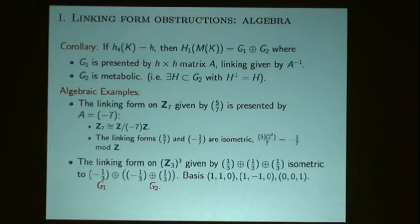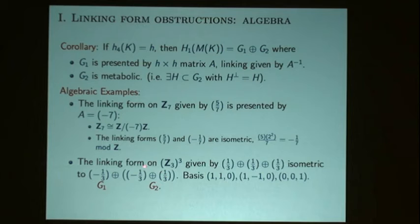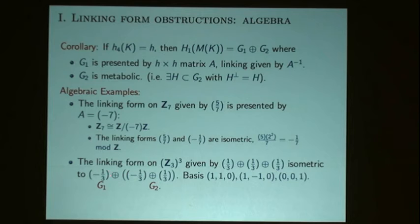In doing this work there's lots of algebra to be done understanding the equivalence of quadratic forms. The second example is the linking form on Z3-cubed, a direct sum of single linking forms where each generator has self-linking one-third and is orthogonal. This form is isometric to a form with a minus one-third, minus one-third, and one-third. Written in this basis, you see this is metabolic — there are elements of self-linking zero. So it splits off a metabolic piece and a piece with a one-by-one presentation.